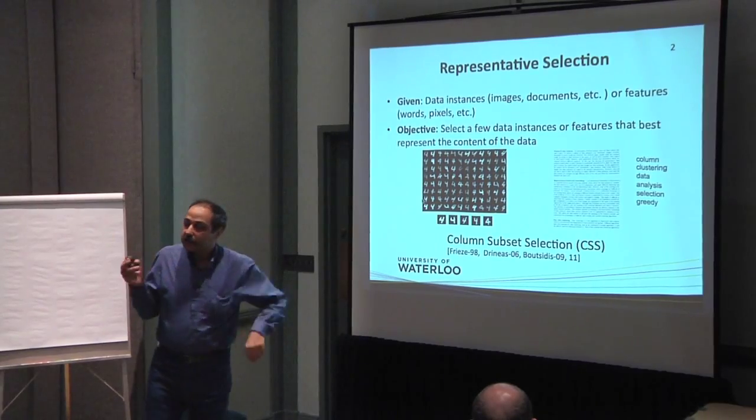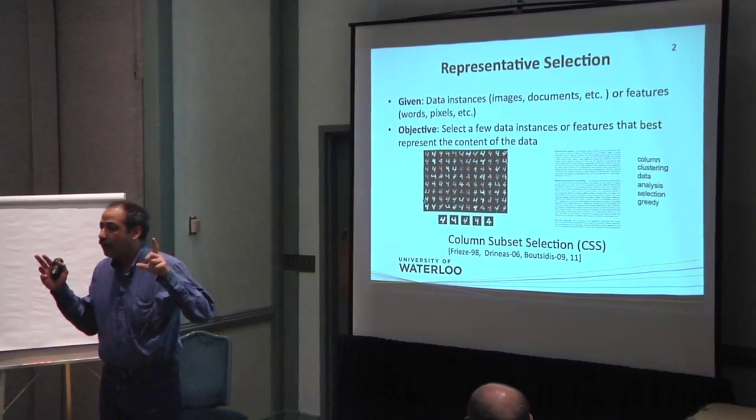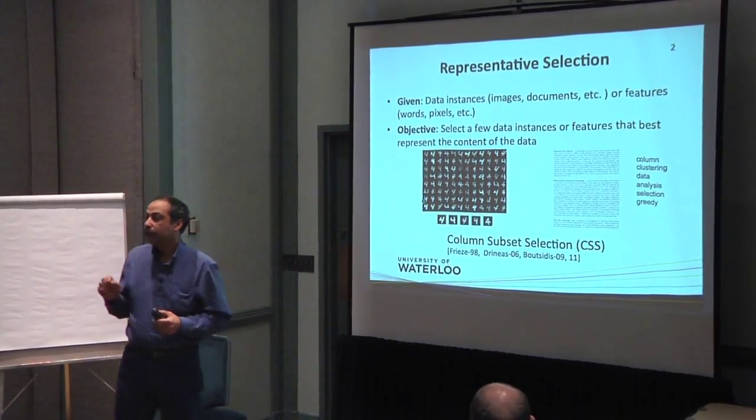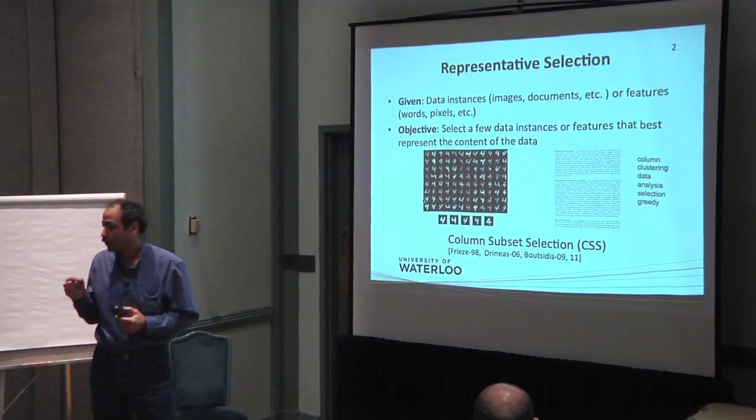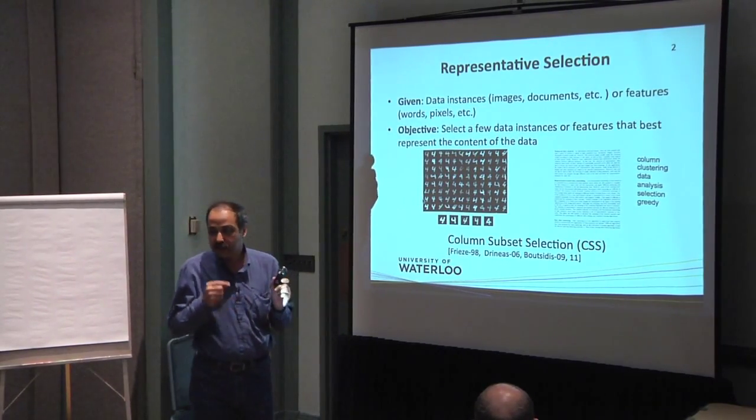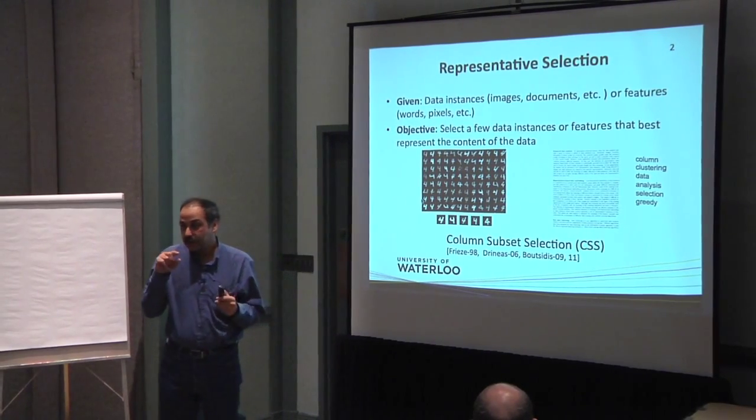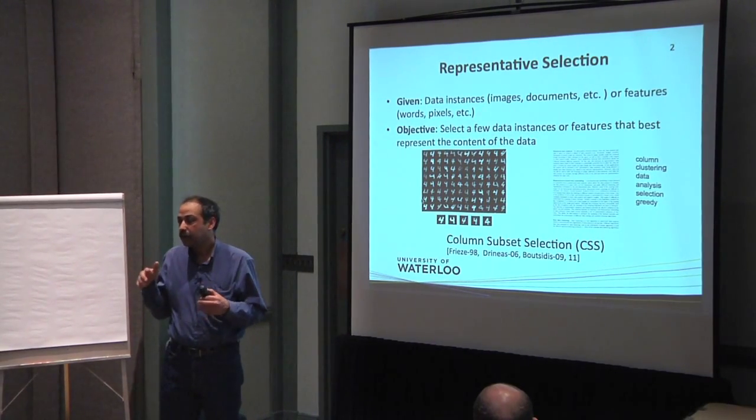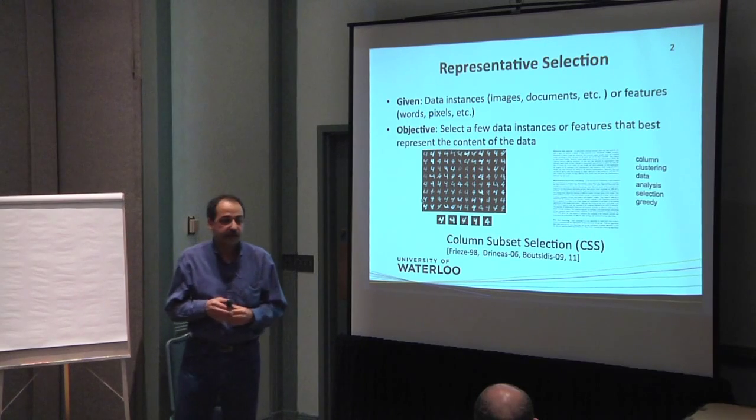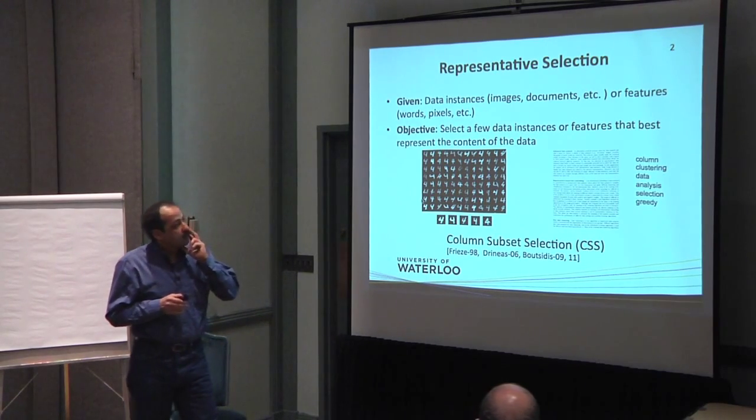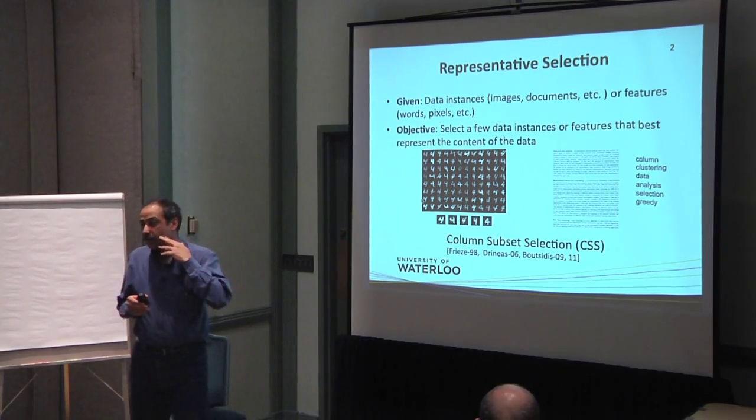Column subset selection is the problem that you have a matrix and you are trying to select a subset of rows or a subset of columns of that matrix such that this subset of rows or subset of columns best span the whole matrix. And this has some applications.